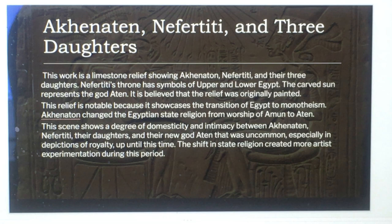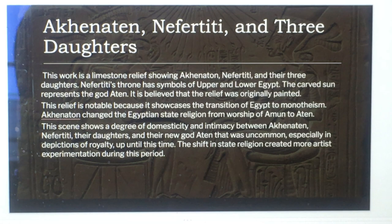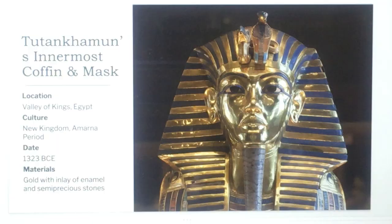Akhenaten changed the Egyptian state religion from worship of Amun to Aten. This scene shows a degree of domesticity and intimacy between Akhenaten, Nefertiti, their daughters, and their new god Aten — uncommon especially in depictions of royalty up until that time. The shift in state religion created more artistic experimentation during this period.